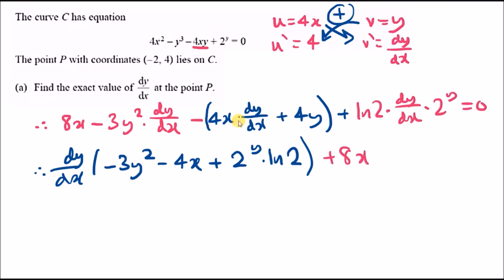Let's evaluate piece by piece. We've got -3y² - 4x. Plug in x = -2 and y = 4. That's 3(16) - 4(-2) = -40 for these two terms. Then 2^y log 2: 2^4 is 16, so it's 16 log 2.